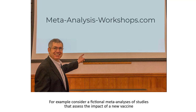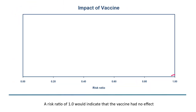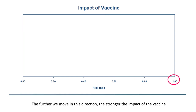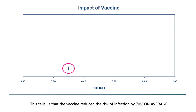For example, consider a fictional meta-analysis of studies that assess the impact of a new vaccine. A risk ratio of 1 would indicate that the vaccine had no effect, and the further we move in this direction, the stronger the impact. Suppose that the mean risk ratio is 0.30 — this tells us that the vaccine reduced the risk of infection by 70% on average.